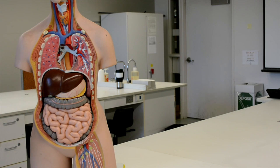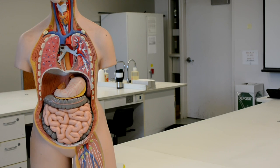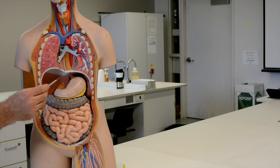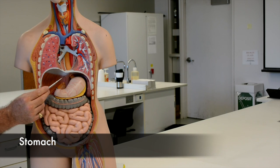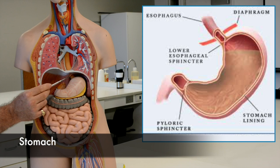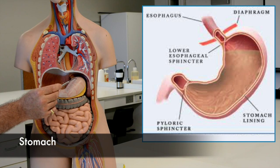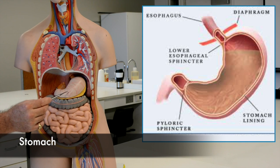Now if we get rid of the liver, we can get a better view of the stomach. We can see the oesophagus as it passes through the diaphragm and enters the stomach.